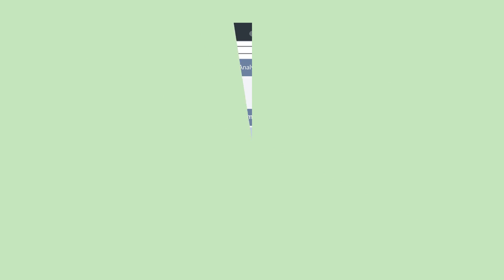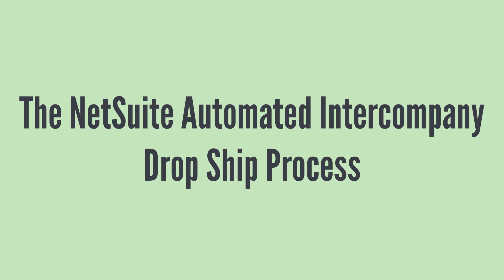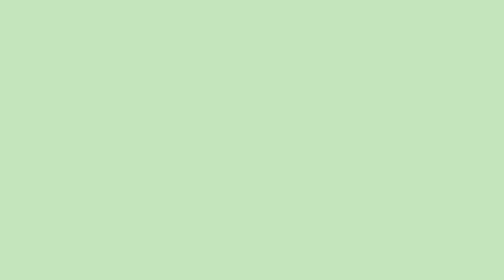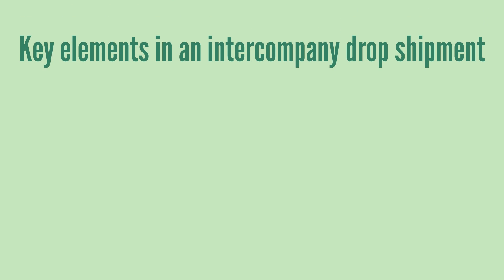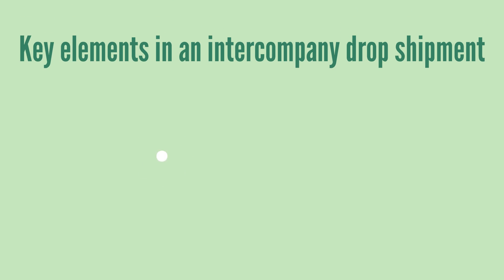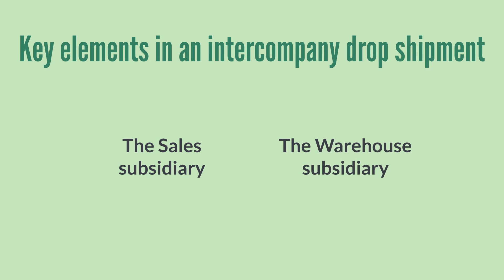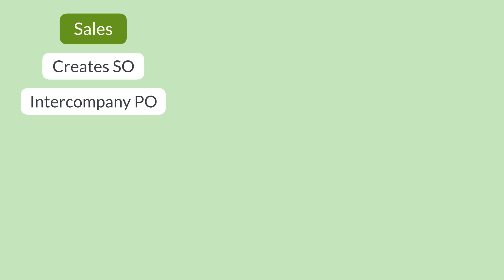What is the process for creating intercompany drop shipments? Let's break it down into its key stages. There are two key players in an intercompany dropshipment: the sales subsidiary and the warehouse subsidiary. The sales subsidiary begins the process by creating the sales order for an external customer, then creates an intercompany purchase order to purchase the item from the warehouse subsidiary.